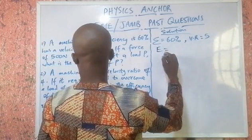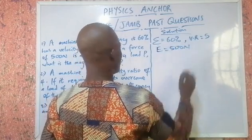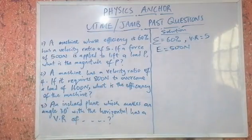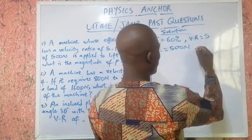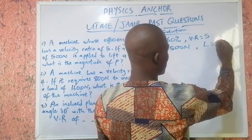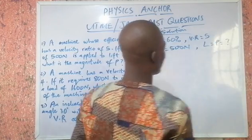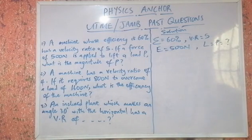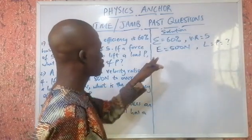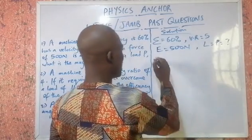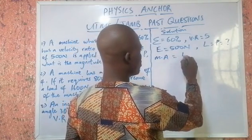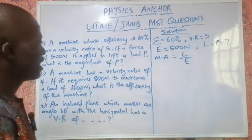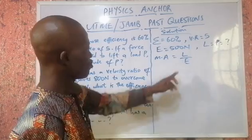The effort is 500 newtons, and the load P is what we need to find — that's our question mark. To deal with effort and load, we know that mechanical advantage equals load over effort. That's the formula we use whenever we need to work with load and effort.